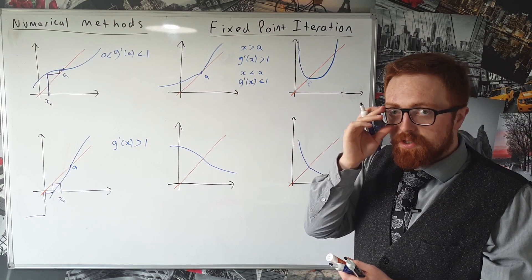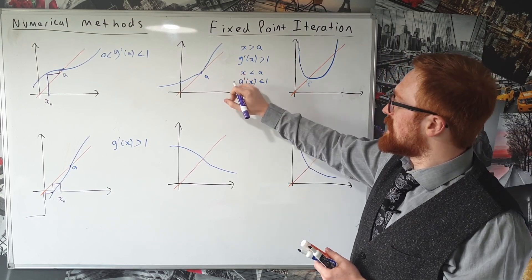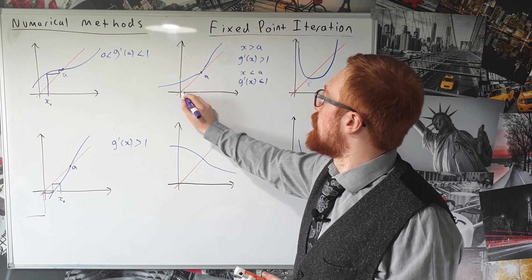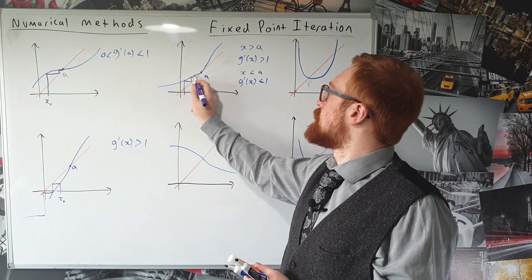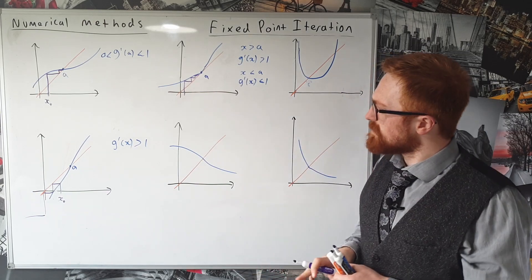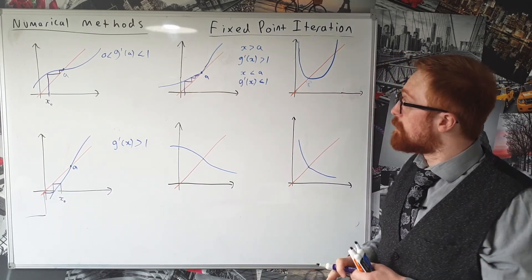So let's just demonstrate how this works. So if x is less than A, so if we pick some point over here, and we go up to the blue, and then across, and then up, and then across, and so on, we're going to get closer and closer to that point A.